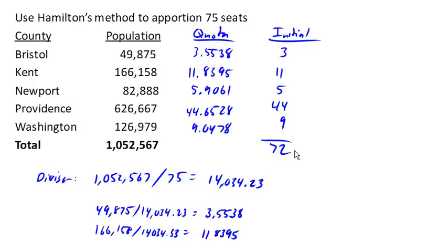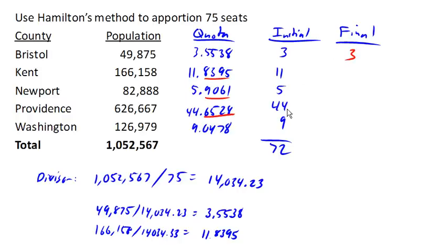Now we get to do the adjustment part. We're going to assign the remaining three seats to the counties with the largest decimal part of their quota. The largest decimal part is 0.6528, the next largest is 0.8395, and the next is 0.9061. These three counties will each get one of those extra seats, and that takes us up to the 75 total seats that we had to apportion.